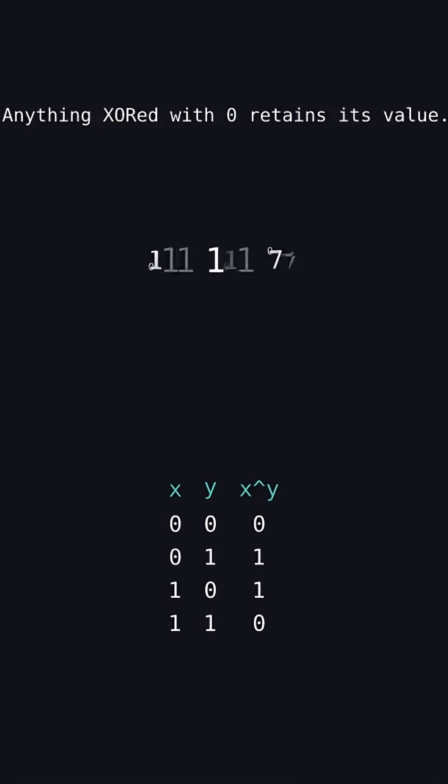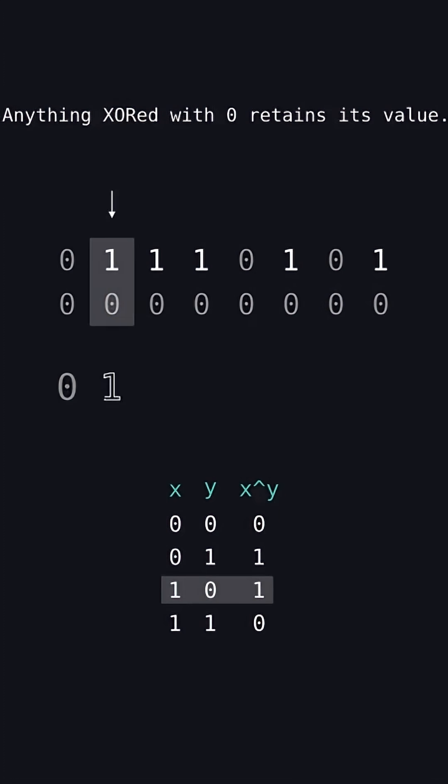Likewise, a variable XORed with zero just retains its original value. You can examine the truth table and confirm that that is true.